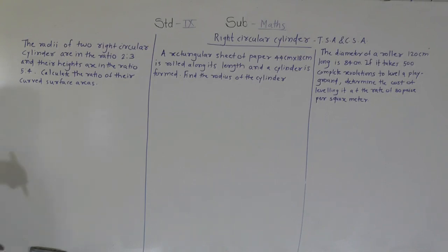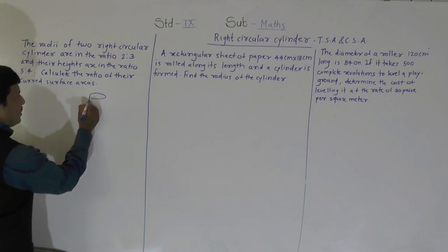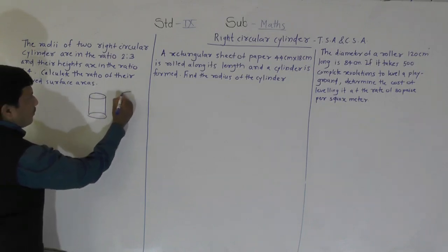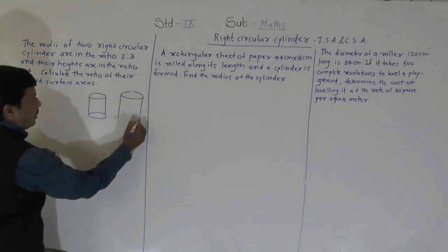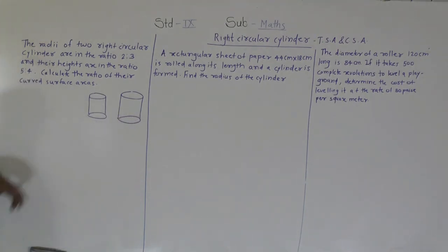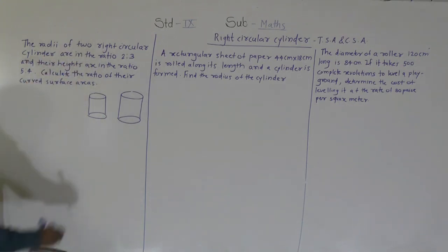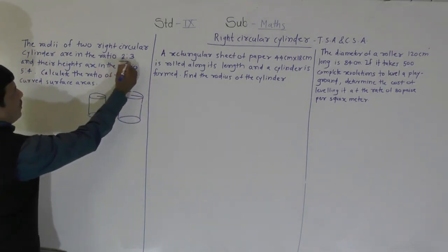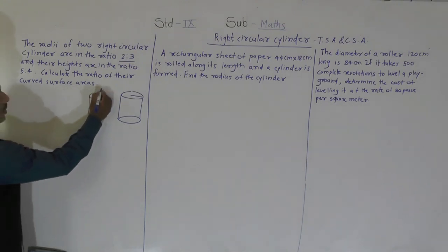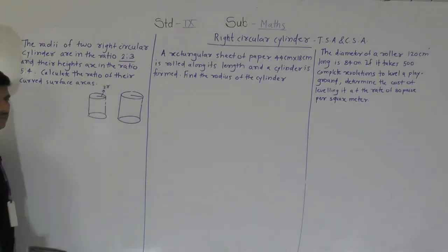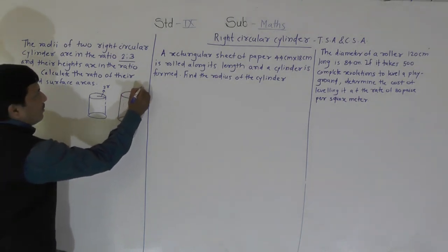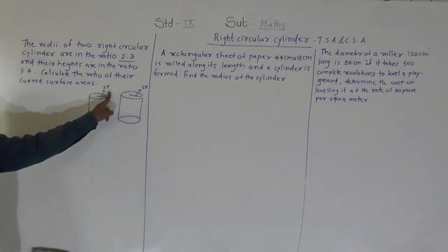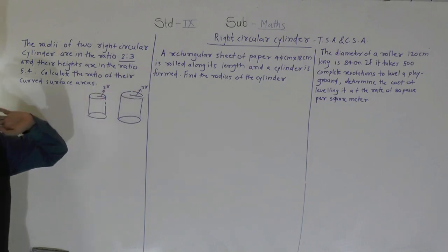There are two cylinders, so two different radii and heights are given. The radii of the two right circular cylinders are in the ratio 2:3, meaning the two radii are different. We will take the first radius as 2r and the second radius as 3r, because the ratio is given and we are using r as a variable.